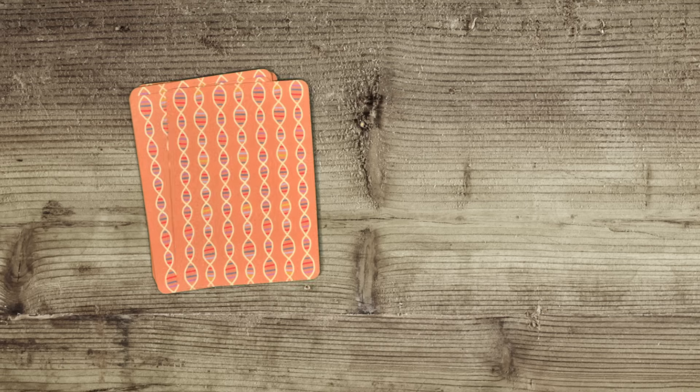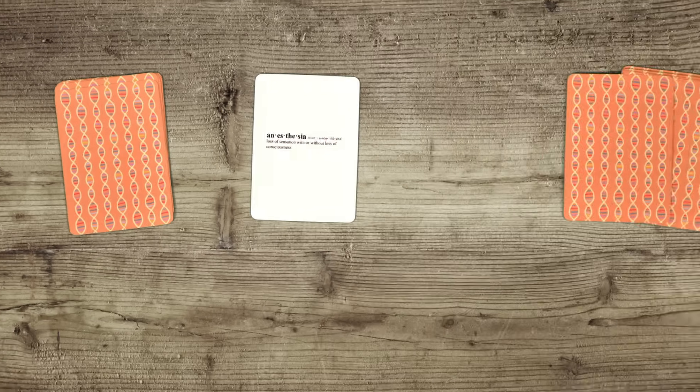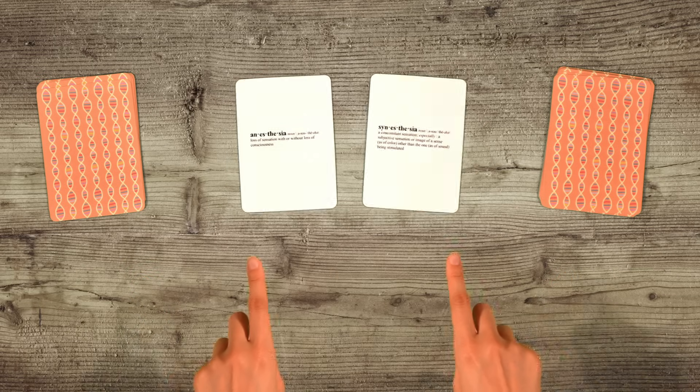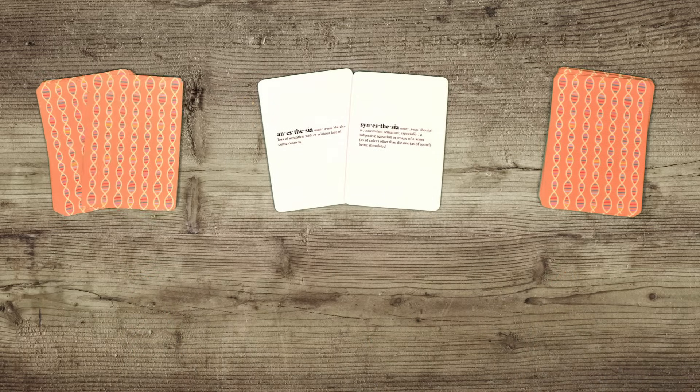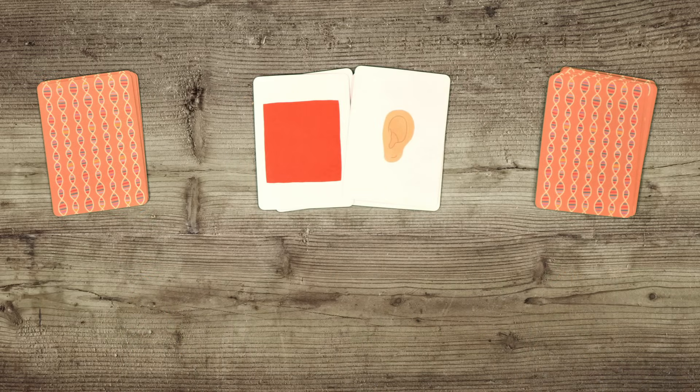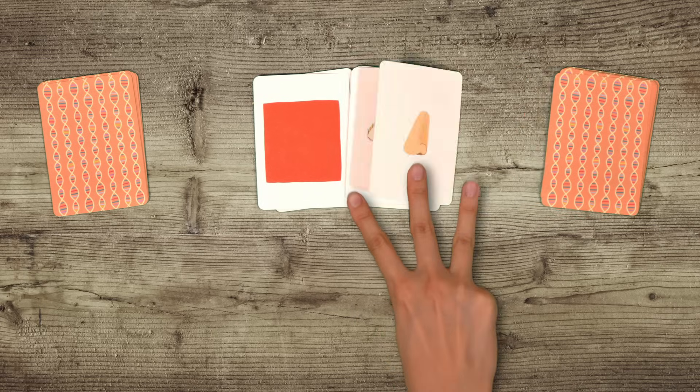Sharing the same root with anesthesia, meaning no sensation, synesthesia means joint sensation. Having one type, such as colored hearing, gives you a 50% chance of having a second, third, or fourth type.